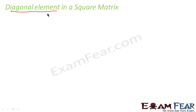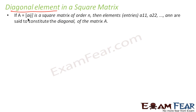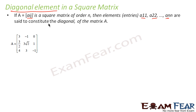Let us understand the diagonal elements in a square matrix. If aij is a square matrix of order n, then the entries a11, a22, ... ann are the diagonal elements of the square matrix. For example, a11 is a diagonal element, while a12 and a13 are not.